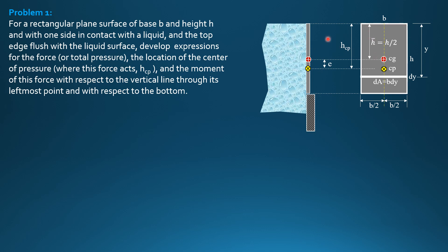This is a rectangular surface flush with the liquid surface, with dimensions B and H. This is the centroid of area, and this is the center of pressure where the force acts — the projected vertical surface. Barred H is H over 2, the location of the centroid from the top. I'll call H sub Cp the distance between the centroid and center of pressure, Se. The force acts at the center of pressure — that's why it's called the centroid of pressure, not the centroid of area. This is where the total pressure acts: the centroid of the pressure diagram.